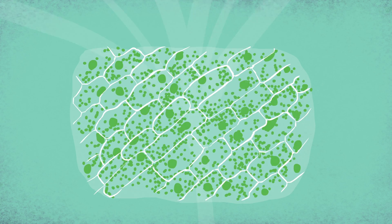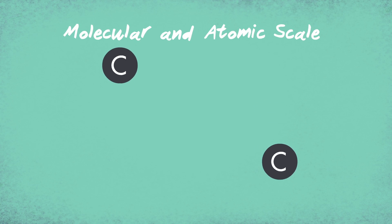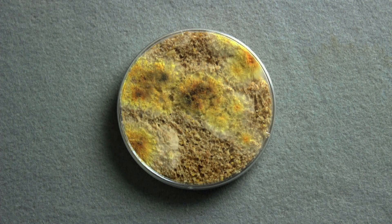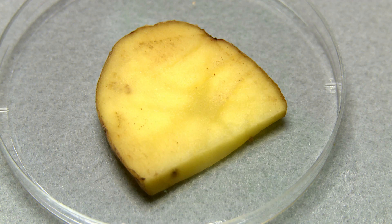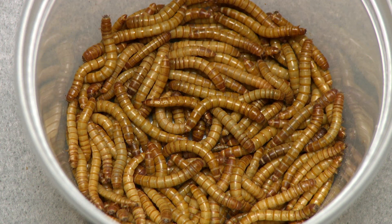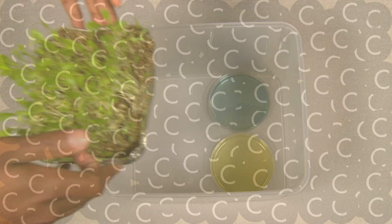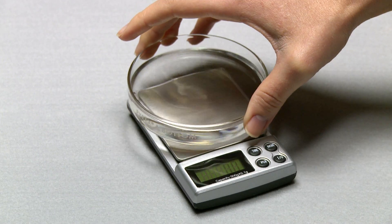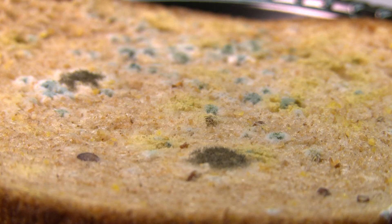From the macroscopic to the microscopic, to the molecular and even the atomic scale. Today we're taking a close look at how carbon is transformed during everyday events. Food, fuel, plants and animals — whether they're alive or dead — all contain carbon atoms and store or use energy. We're going through an investigation and look a little closer to examine what's happening on a very, very tiny scale.